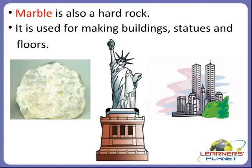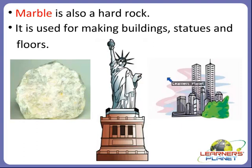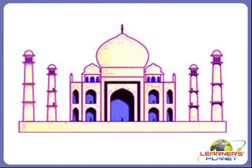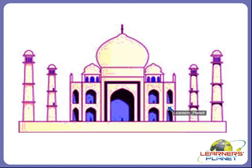The second type of rock is marble. Marble is also a hard rock and it is used for making buildings, statues and floors. Marble is white in color and it is very useful for making buildings, statues and floors. One very great example of marble is the Taj Mahal — the Taj Mahal in Agra is built of white marble.